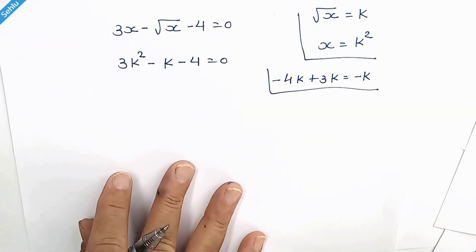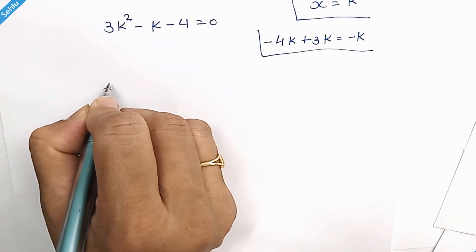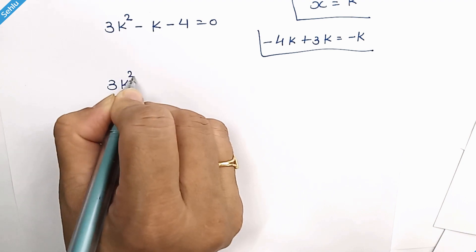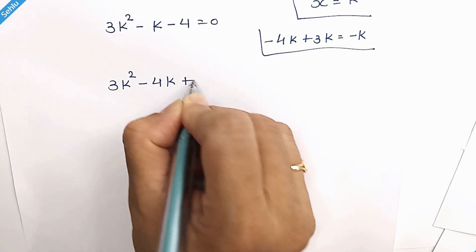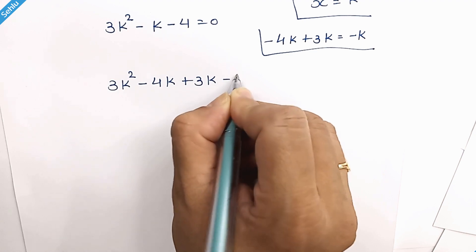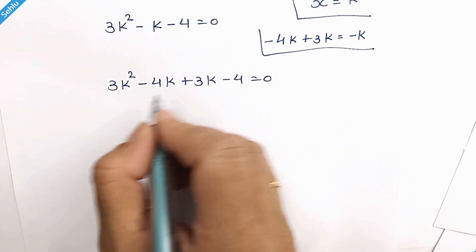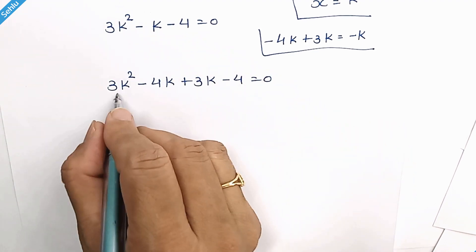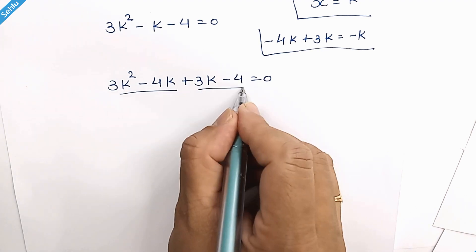So our equation will be 3k squared minus 4k plus 3k minus 4 equals 0. Taking k from here and 1 from here.